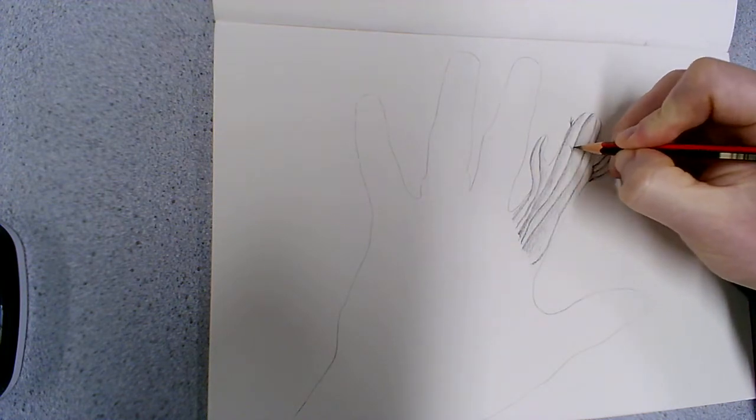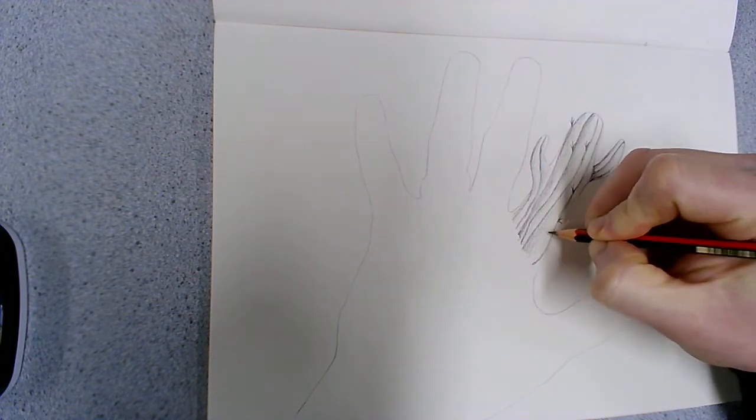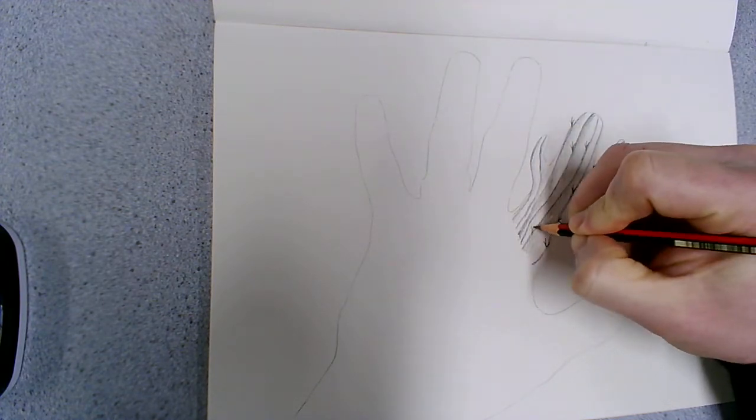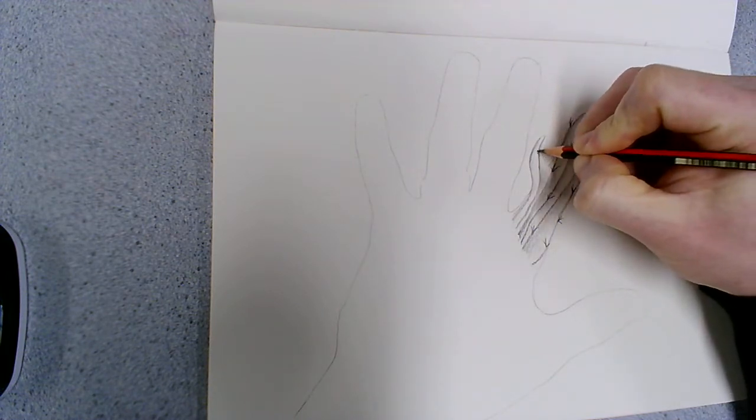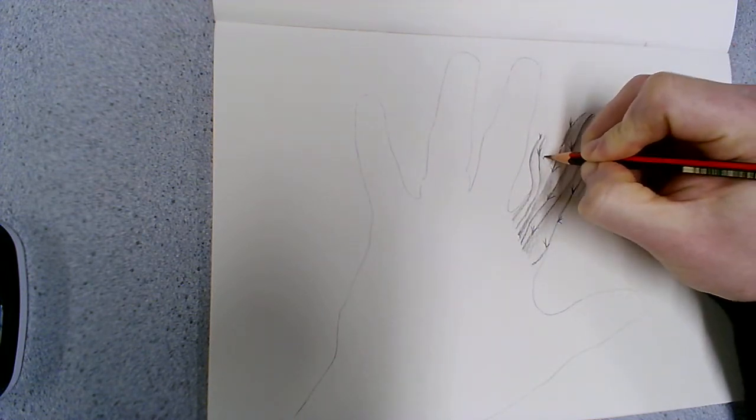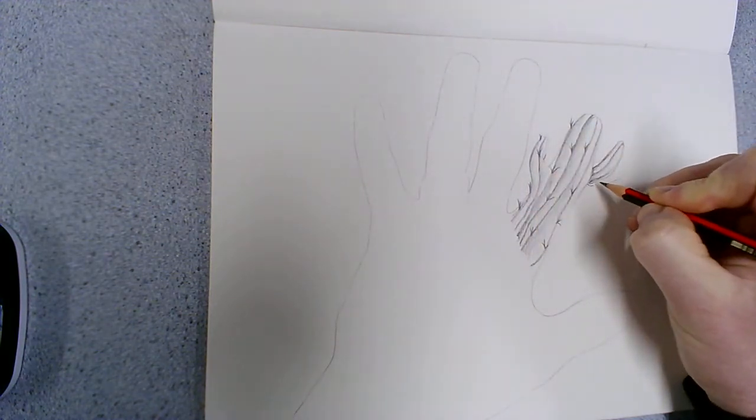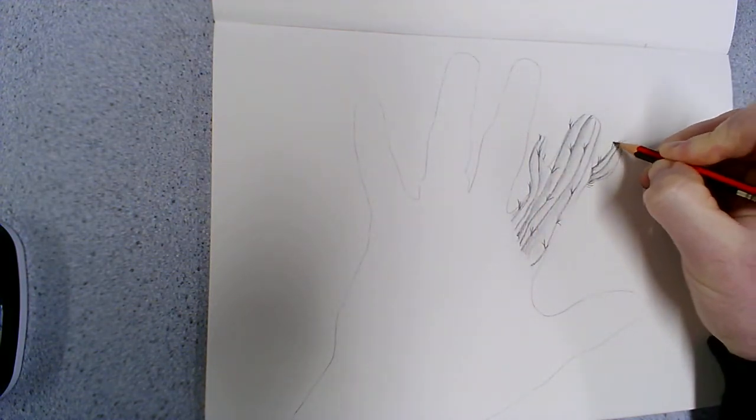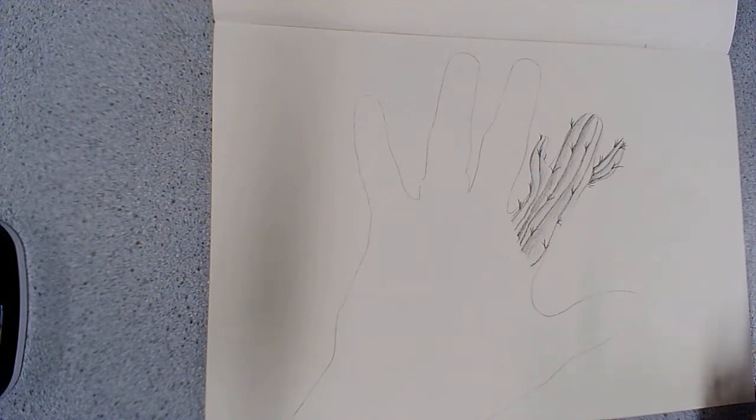I'm going to jump straight into my 4B and add tiny little spiky bits like a cactus does. Just dot them about everywhere, make sure they're all pointing in different directions. Try not to bunch them up. It should, fingers crossed, start looking like a cactus. There you go.